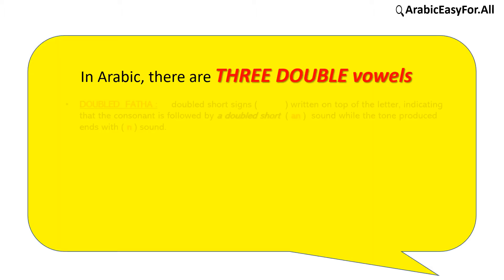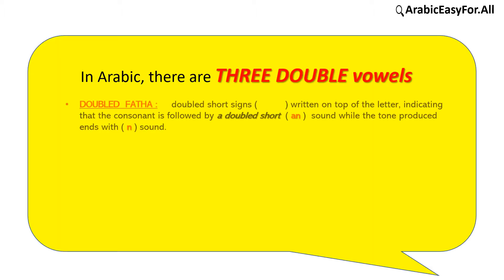Doubled فتحة are doubled short signs written on top of the letter, indicating that the consonant is followed by a doubled short N sound, while the term produced ends with an N sound.